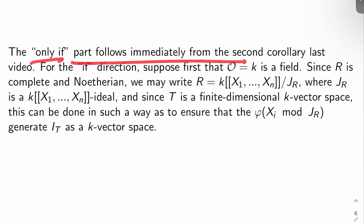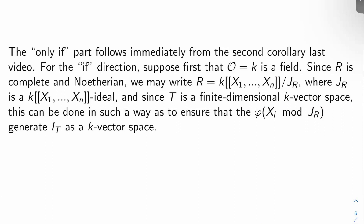The only-if part follows immediately from the second corollary in the last video. For the if direction, first suppose that O equals K is a field. Since R is complete and Noetherian, you can write R as K double-bracket X_1 through X_n mod J sub R for some ideal J sub R. Since T is a finite-dimensional K-vector space by the finite flat assumption, this can be arranged so that phi of the X_i mod J sub R actually generate the kernel I sub T as a K-vector space.